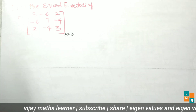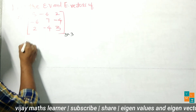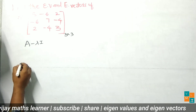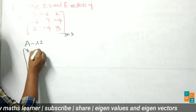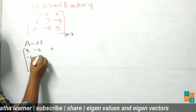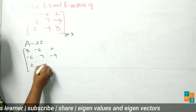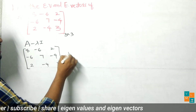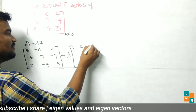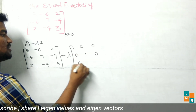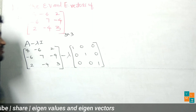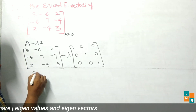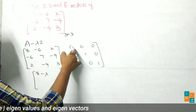We use the characteristic equation to find the eigenvalues. To find the characteristic polynomial, what we require is A minus lambda I. The matrix A has entries 8, -6, 2, -6, 7, -4, 2, -4, 3. Lambda is a scalar, and I is the 3 by 3 identity matrix with entries 1, 0, 0, 0, 1, 0, 0, 0, 1.